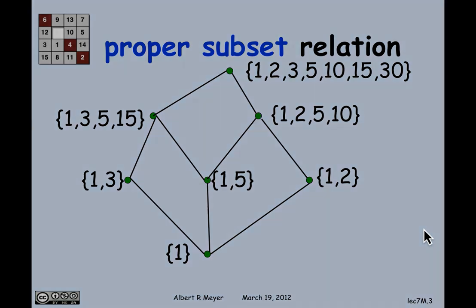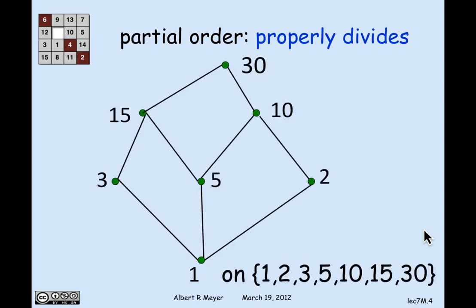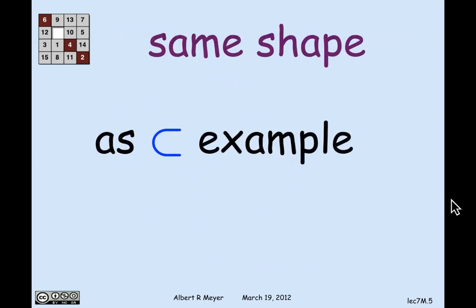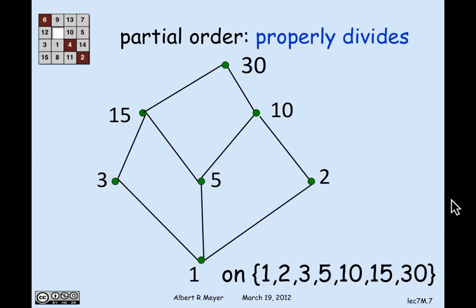Now, let's look at a very similar example of the proper divides relation on some numbers. So proper divides means A properly divides B if A divides B and it's not equal to B. And I'm interested in the proper divides relation on this set of seven numbers, 1, 2, 3, 5, 10, 15, and 30. And now there's a path from 5 to 30, because 5 is a divisor of 30, and it's not equal to 30. It's a proper divisor of 30. And of course, the point of this picture is to show that the proper divides relation on these seven numbers has exactly the same shape as the proper subset relation on those seven sets.